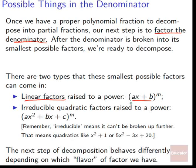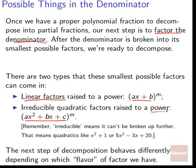Or we could have irreducible quadratic factors — things Ax squared plus Bx plus C that can't be broken up further into linear factors in the reals. They'll also be raised to some power M. Irreducible means it can't be factored further in the reals. For example, x squared plus 1 has no real roots — x squared plus 1 equals 0 has no real solutions — so it can't be factored any further. Therefore x squared plus 1 is irreducible.